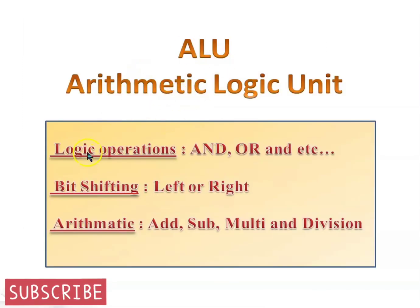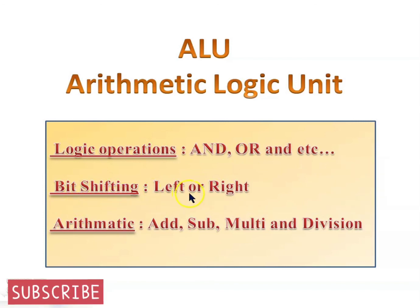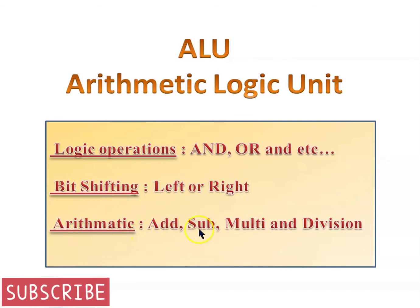The ALU performs all logical operations such as AND, OR, and so on. Bit shifting — shifting the position of bits either left or right — is considered as multiplication or division. Arithmetic operations include addition and subtraction; multiplication and division can be done by repetitive additions and subtractions respectively.